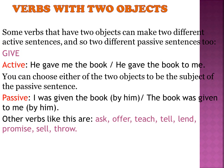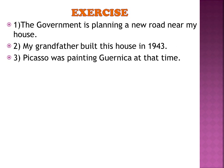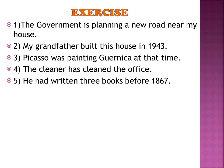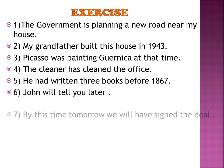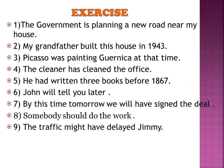Verbs like ask, offer, teach, tell, lend, promise, sell, and throw can all have two objects and we can choose which one to place as the subject. Now here are some exercises: 'The government is planning a new road near my house.' 'My grandfather built this house since 1943.' 'Picasso was painting Guernica at that time.' 'The cleaner has cleaned the office.' 'He had written three books before 1867.' 'John will tell you later.' 'By this time tomorrow we will have signed the deal.' 'Somebody should do the homework.' 'The traffic might have delayed Jamie.' 'People speak Portuguese in Brazil.'